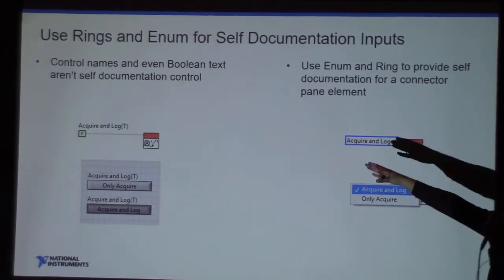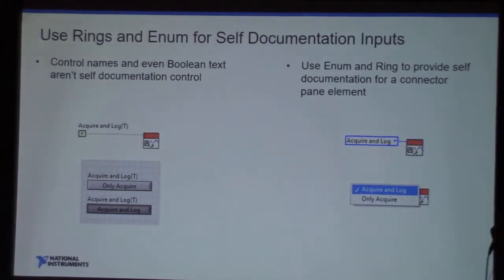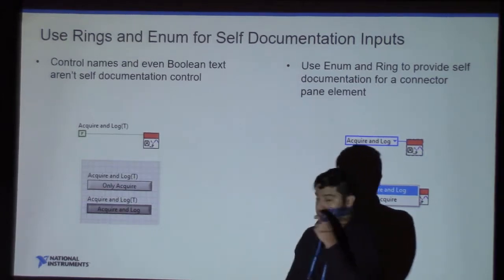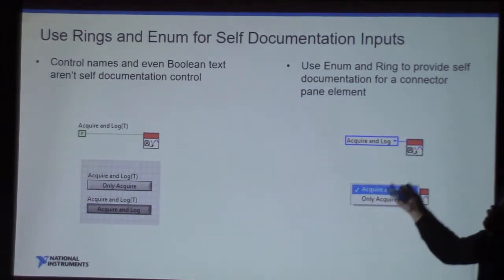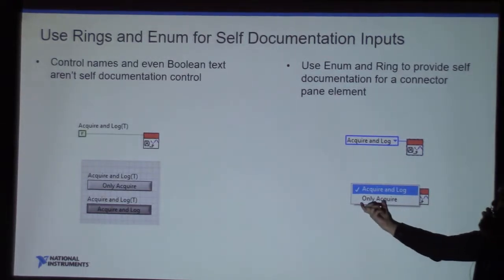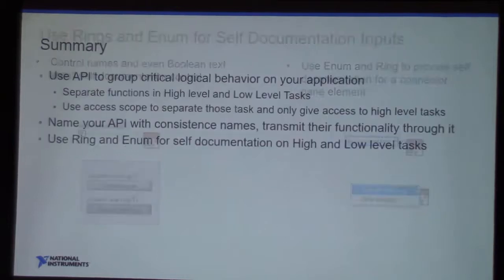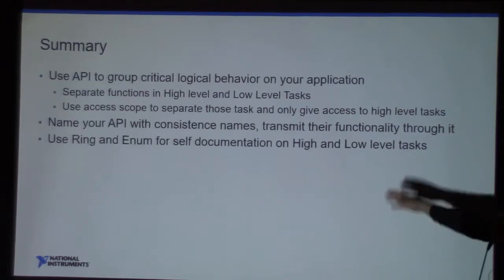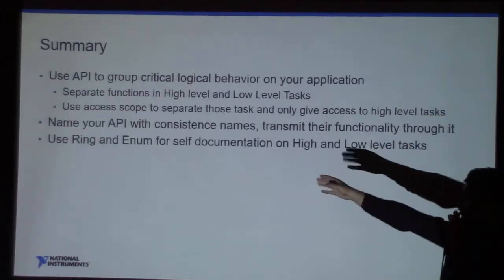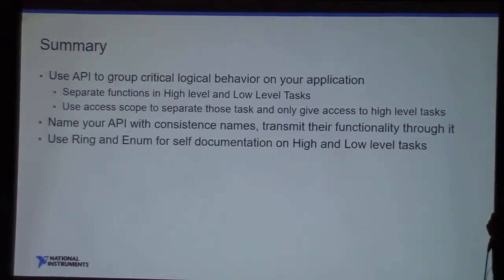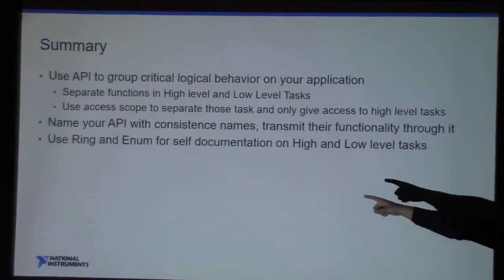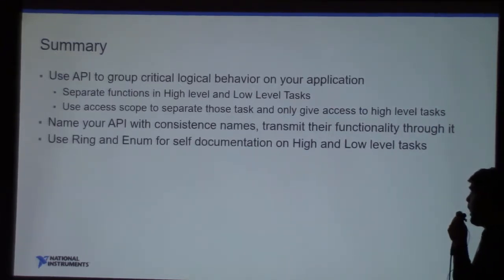Another important thing is to use rings and enums for self-documenting inputs. Control names and even boolean text are not considered self-documenting, but you can use enums and rings to provide self-documentation in a connector. To summarize: use an API to group critical logical behavior in your application; separate functions into high and low level tasks; use access scopes to control what's exposed; name your API with consistent names that reflect their functionality; and use rings and enums for self-documentation.